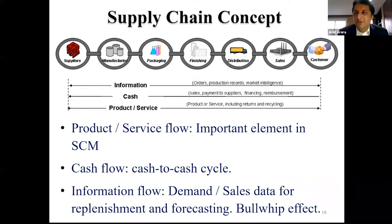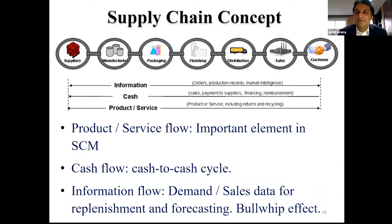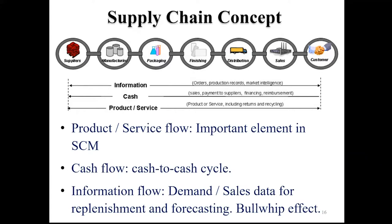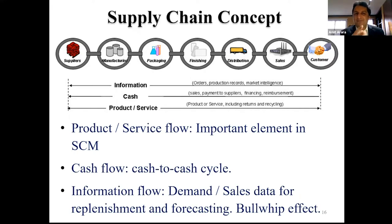Suggestions included manufacturing, suppliers, and finishing — because finishing is that final step in delivering what the customer wants. So the spread of answers covered suppliers, manufacturers, finishing, distribution, and at least three votes for customer. The right answer is actually the customer.